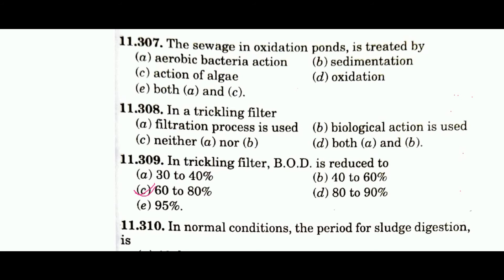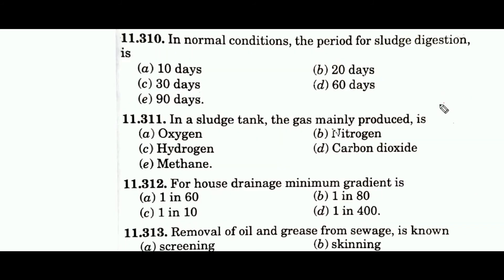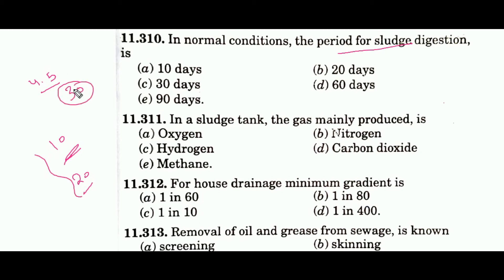Question 310 asks how long sludge digestion takes under normal conditions. The process has acid fermentation and regression stages. In a 2-stage sludge digestion, sludge is admitted to the primary digestion tank for 10 days, then transferred to a secondary tank for 20 days. The total process is completed in 30 days.